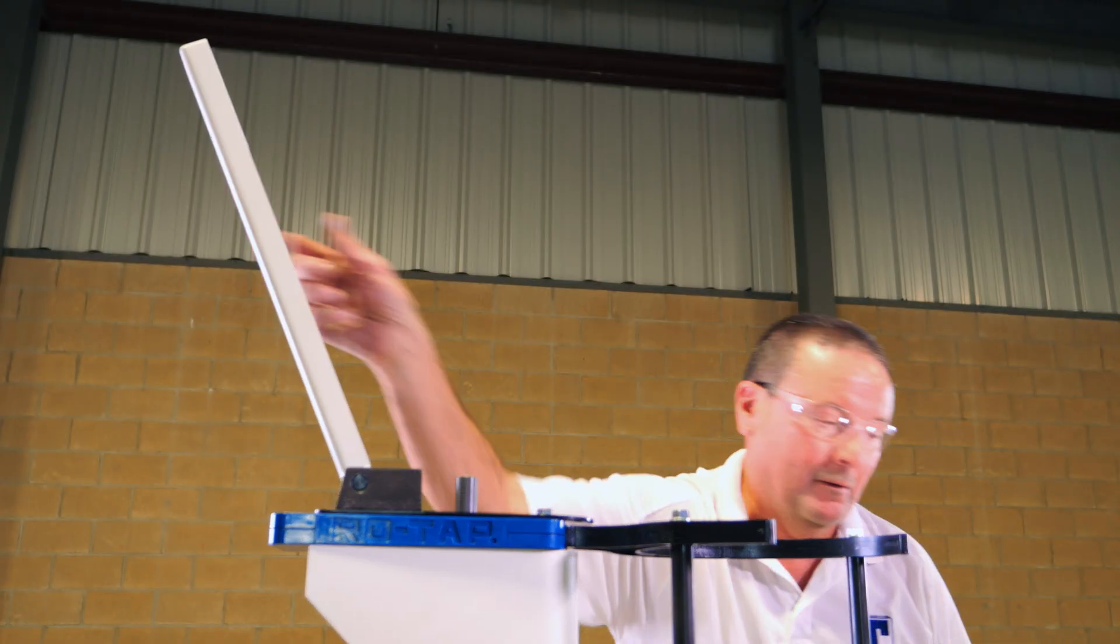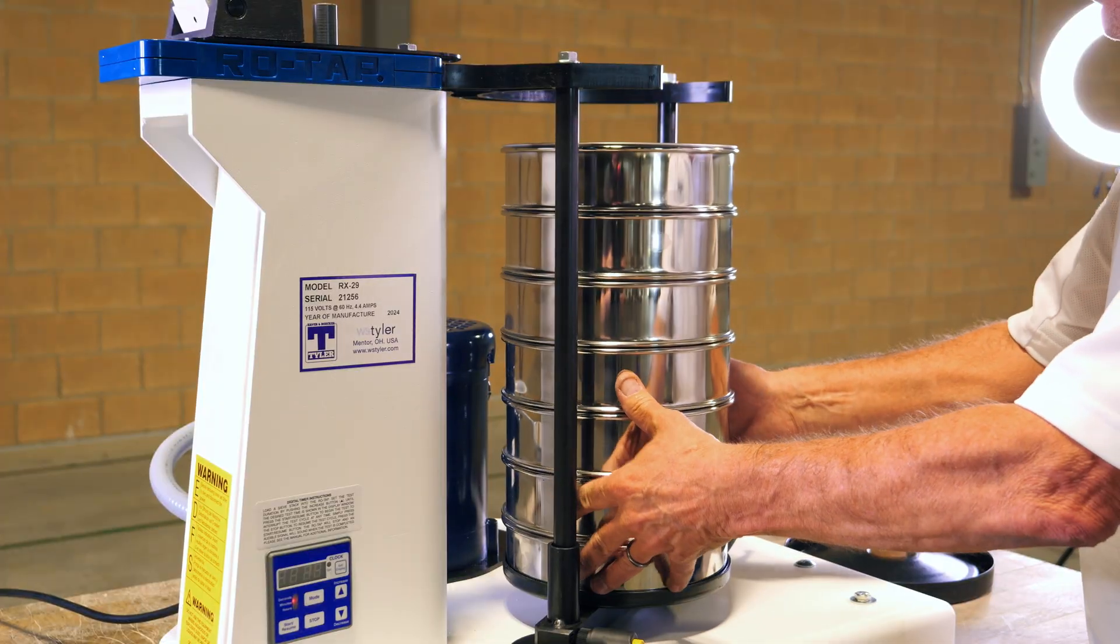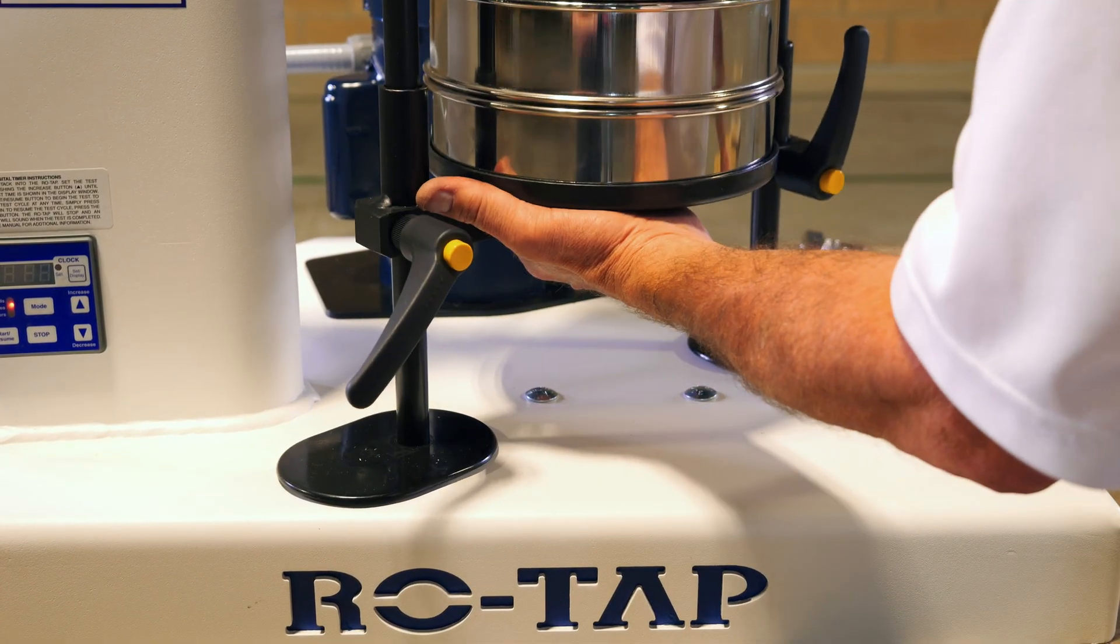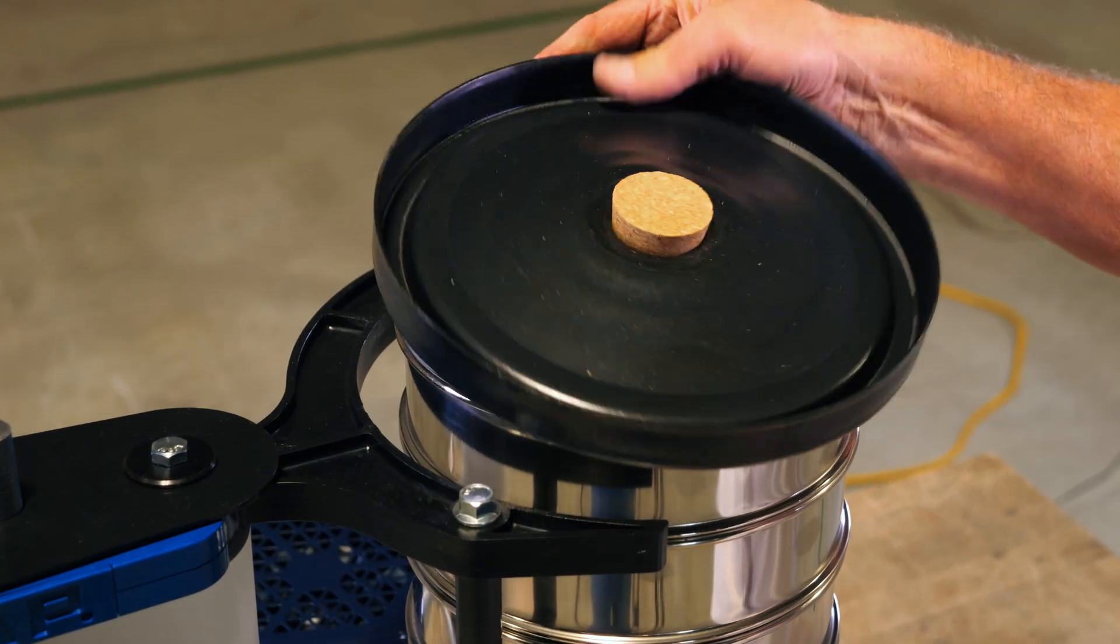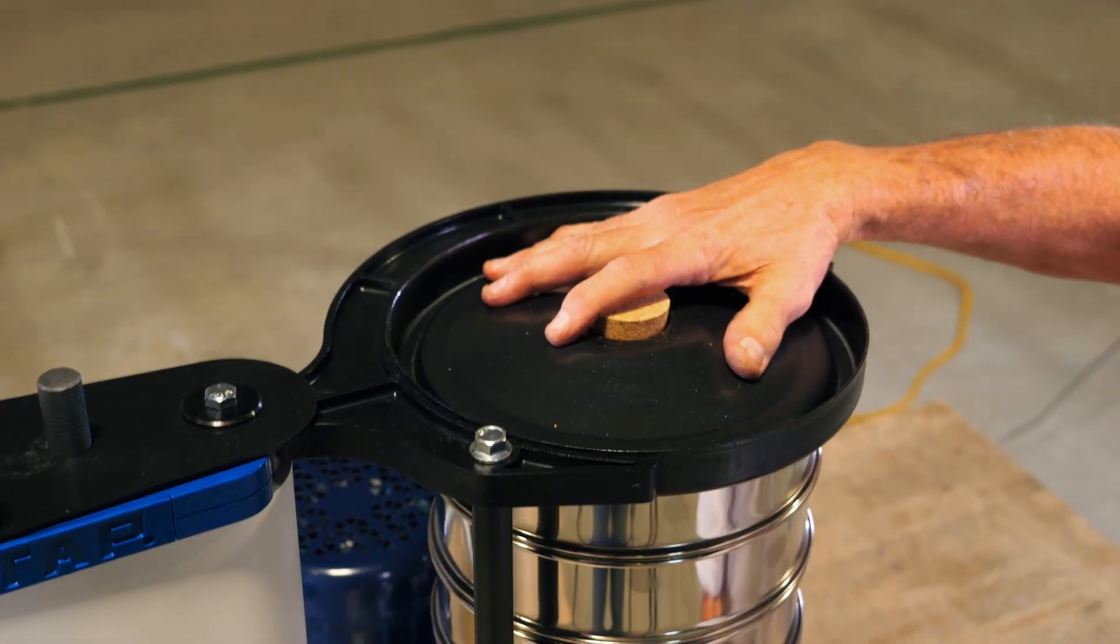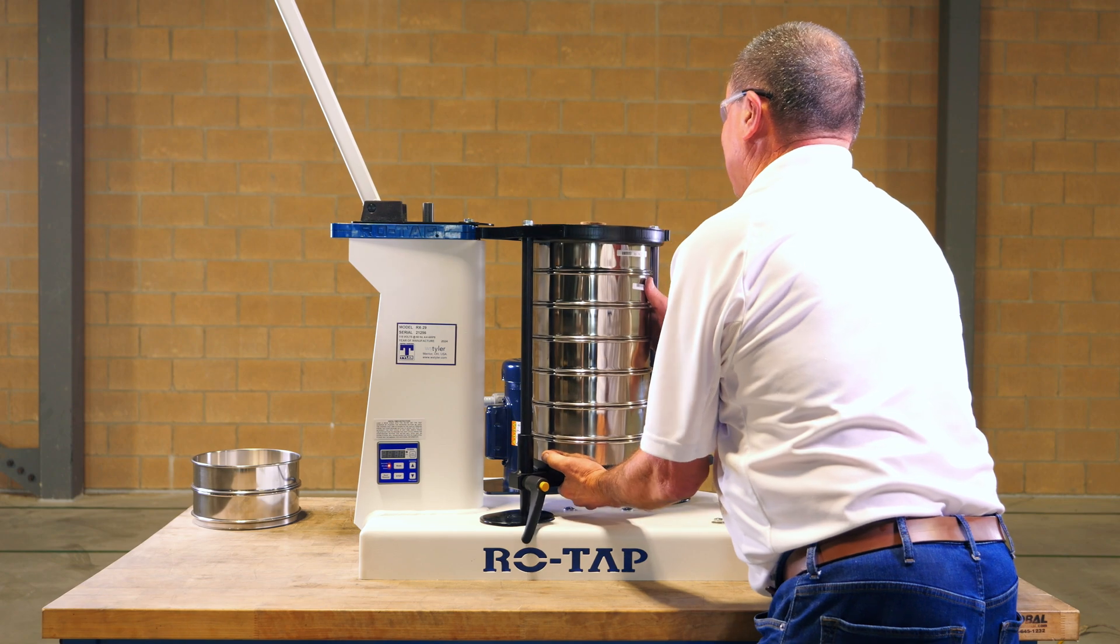Raise the hammer up and now it's time to add the test sieves. The RX29 specifically uses 8 inch test sieves, so set them down on the base plate, and from there we find it's easier to raise the sieves above the top of the ROTAP, set the sieve cover on the top sieves, and then lower it down until it's flush with the top of the upper carrying plate.